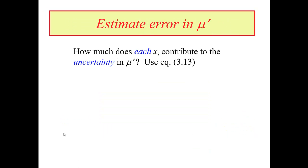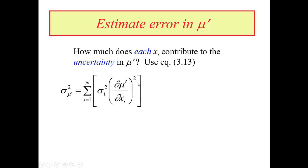Now the question is: what is the error in that mean value mu prime? We go back to Chapter 3 and use the error propagation equation as our starting point. We assume that each individual x sub i measurement is independent, so there is no covariance term. We simply sum up for each data point sigma i squared times the partial of mu prime with respect to x sub i, squared, over all individual data points.